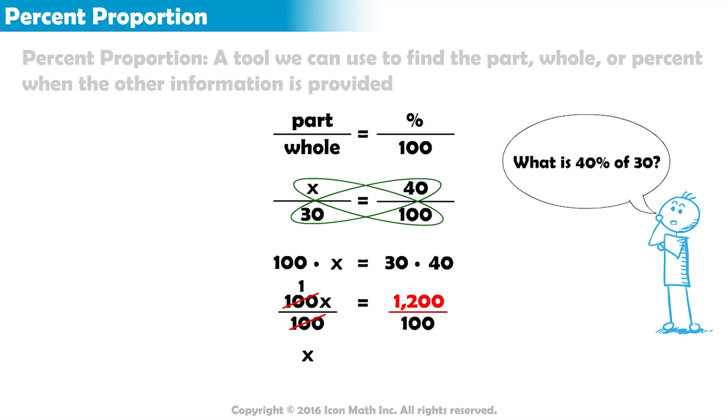1,200 divided by 100 equals 12. x equals 12. 40% of 30 equals 12.